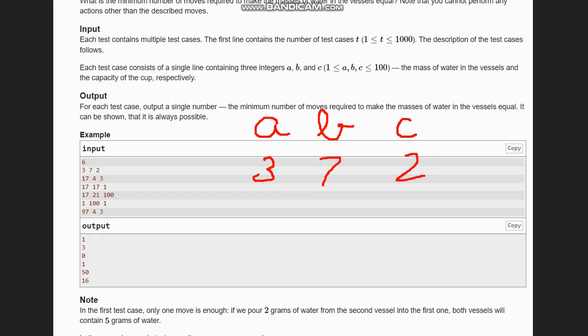So if you see 3, 7, and 2, in this case we need to make a and b equal. So what we need to do? We need 5 in each. How can we do it? We can transfer 2 from b to a. So if we add 2 here and subtract 2 here, it will become 5 and 5, and it will be equal. So why have I taken 2? Because our c is 2, so it can hold